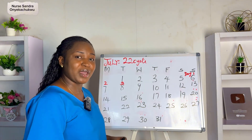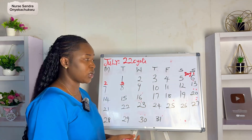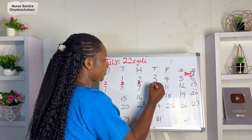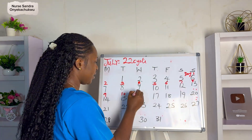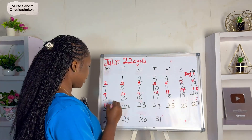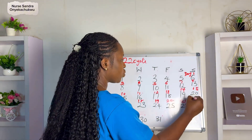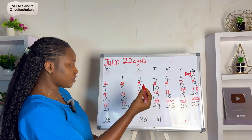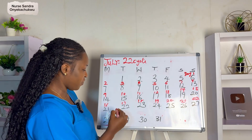When should you expect your next period? It's the same calculation. Start counting from day one through day two, day three, all the way to day 22. If your cycle length is 22, that means your next period is going to start on the 28th of July, which becomes day one of another cycle.